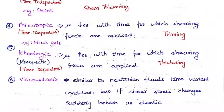For rheopectic fluid, mu increases with time for which shearing force is applied — it is thickening and time-dependent. Out of these five non-Newtonian types, thixotropic and rheopectic are the only time-dependent ones. The sixth case is viscoelastic fluid — similar to Newtonian but if shear stress changes suddenly, it behaves as an elastic material. All these types are based on viscosity.